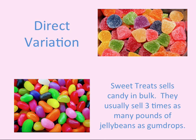Direct variation is often best understood in the context of a real-world application. We're going to be thinking about Sweet Treats, which is a store selling candy in bulk. They usually sell three times as many pounds of jelly beans as gumdrops.